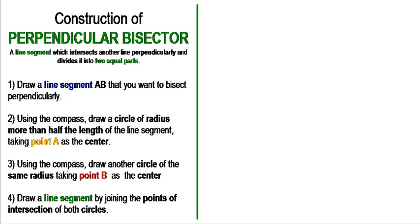Assalamu alaikum students. In this video we are going to discuss how we can construct a perpendicular bisector. First you should know what a perpendicular bisector is. Here is the definition: a line segment which intersects another line perpendicularly and divides it into two equal parts.